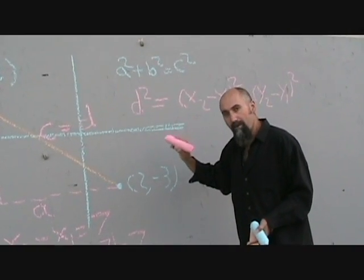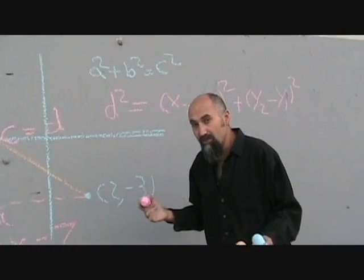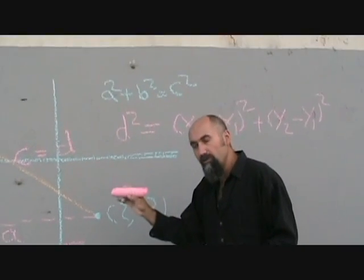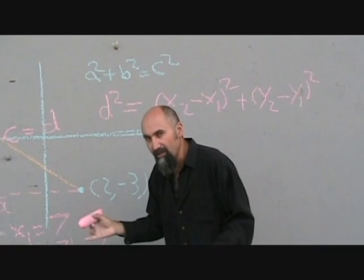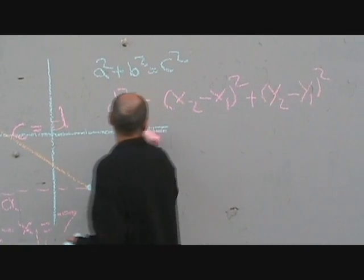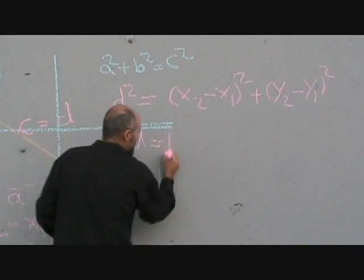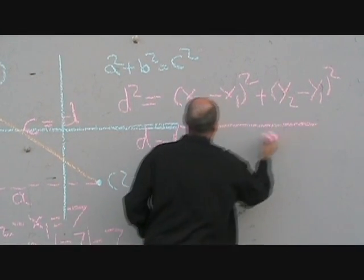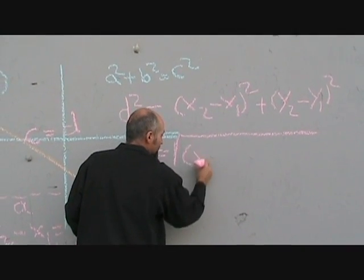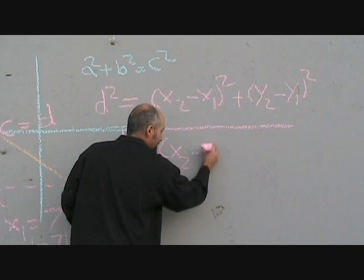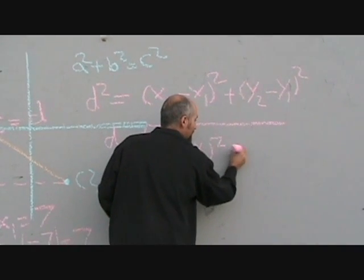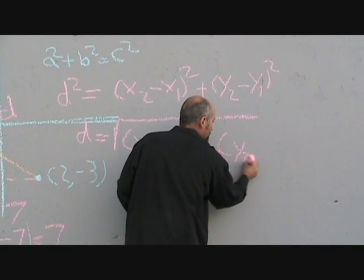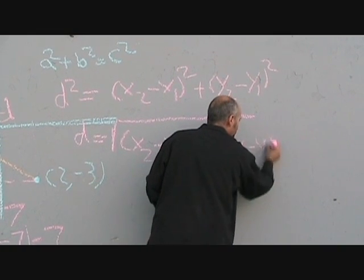So the formula that you should remember, sometimes they give it to you on tests, but later on when you go to math 11 or 12 they're not going to give it to you. So you have to know this formula: distance is equal to the square root of all that, which is x2 minus x1 squared plus y2 minus y1 squared.